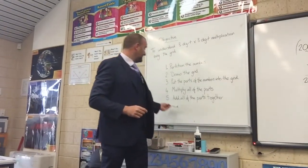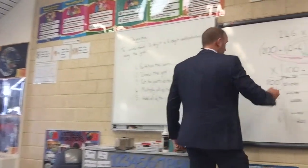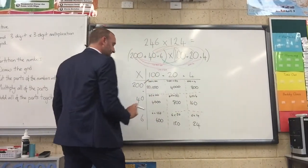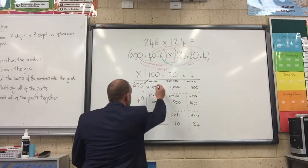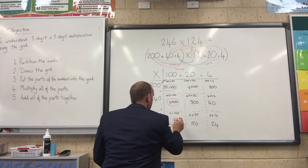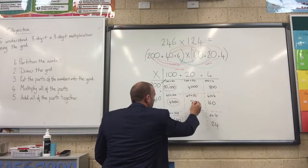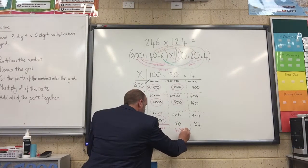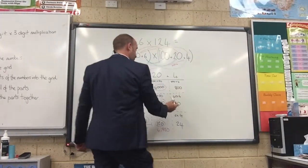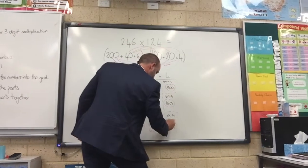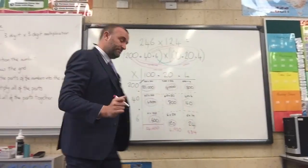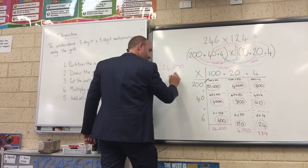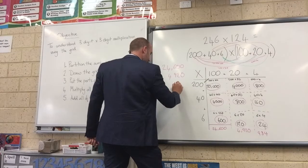Moving on to our last part, we need to add those totals together. You can do this a number of ways — add up your rows first, your columns first, or all your thousands first. I'm going to add up my columns. So: 20,000 plus 20,000 plus 4,000 is 24,000, plus 600 is 24,600. Next column: 4,000 plus 800 is 4,800, plus 120 is 4,920. And my last column: 800 plus 160 is 960, plus 24 is 984. We now need to add those three numbers together: 24,600 plus 4,920 plus 984.